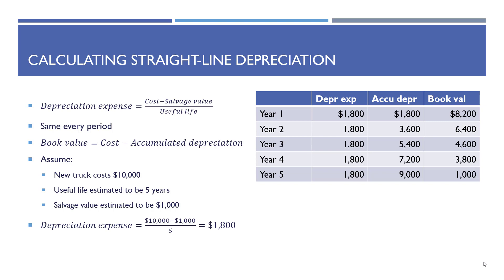In year one, depreciation expense is $1,800, accumulated depreciation is $1,800, and book value at the end of year one is $8,200. In year two, you book another $1,800 in depreciation expense. Accumulated depreciation goes up to $3,600 and book value goes down to $6,400 — either $8,200 minus $1,800, or $10,000 minus $3,600.